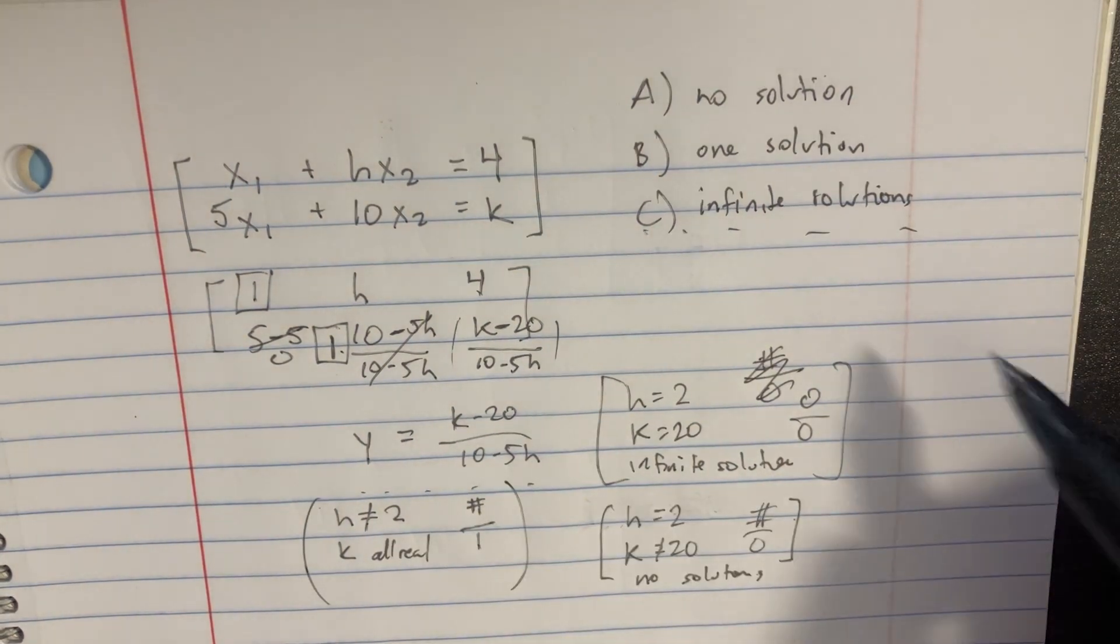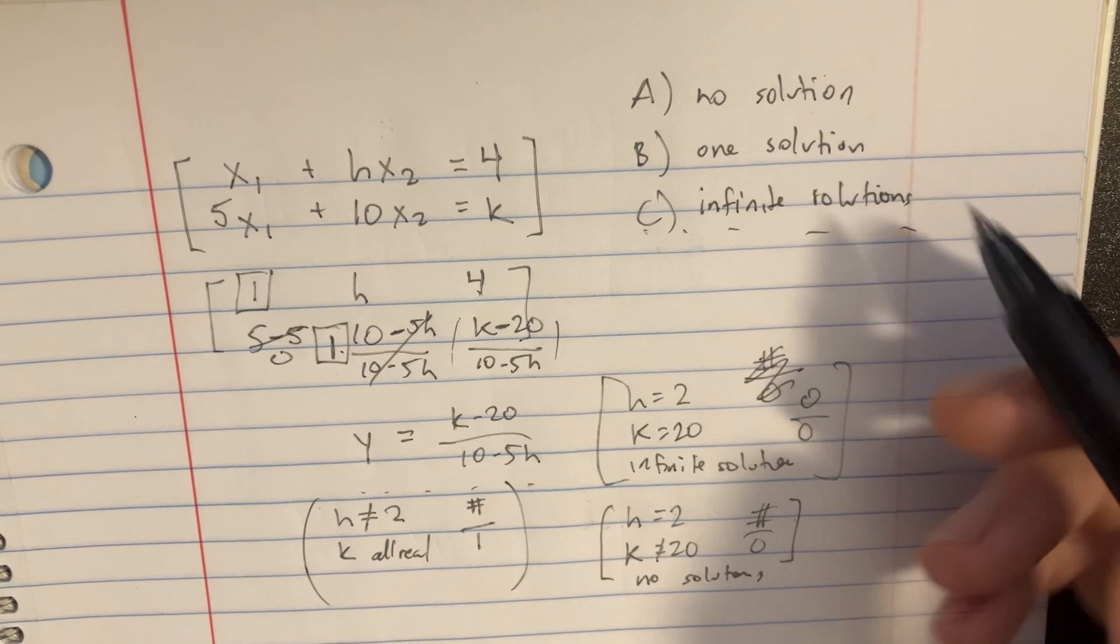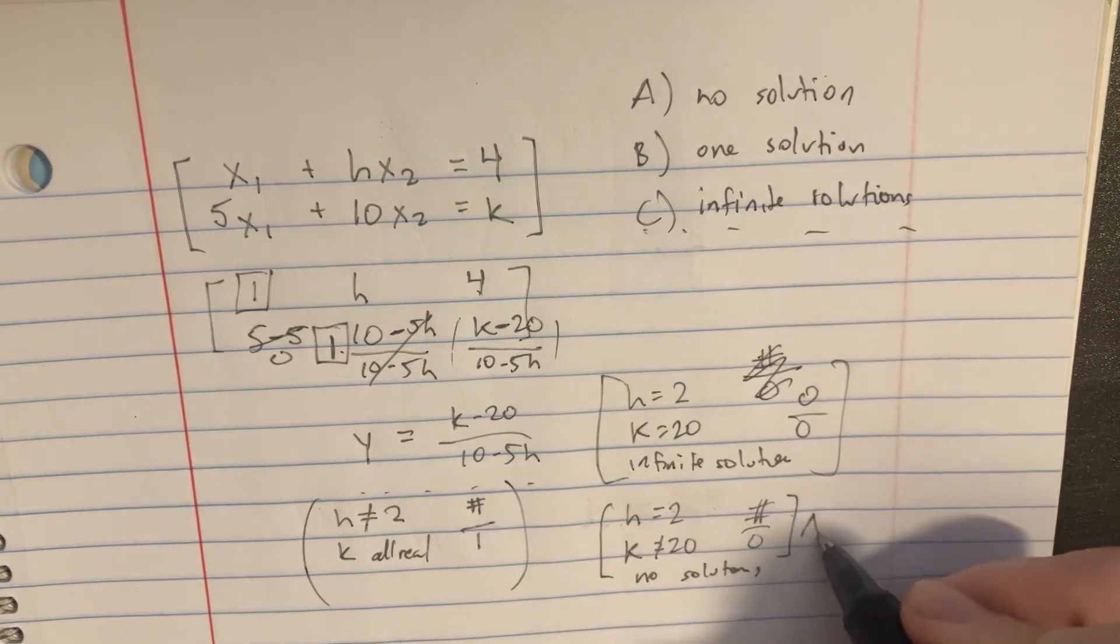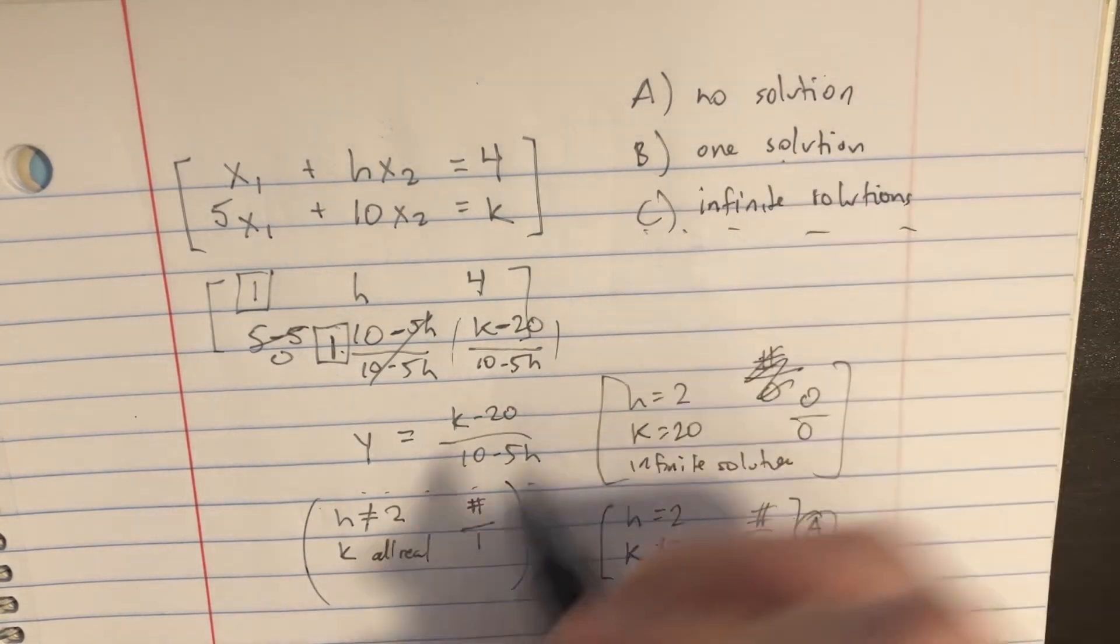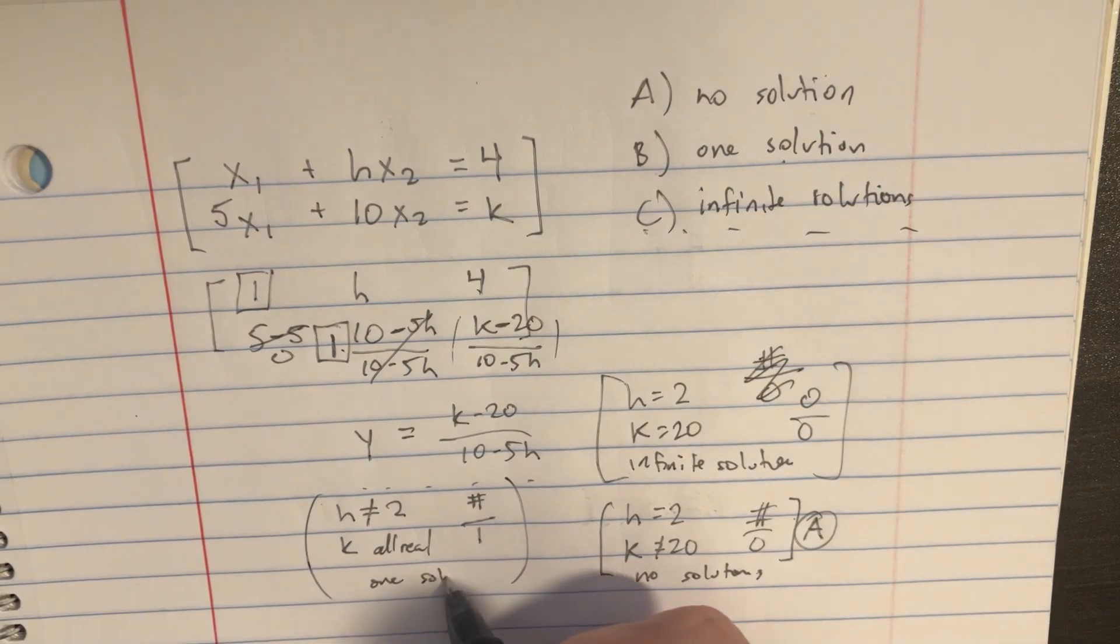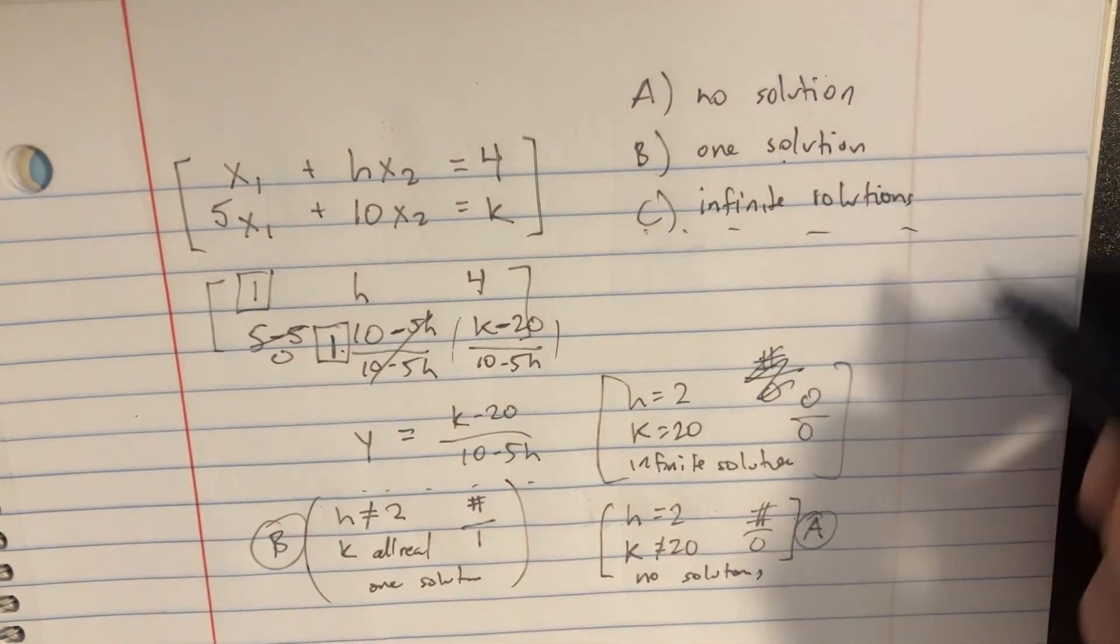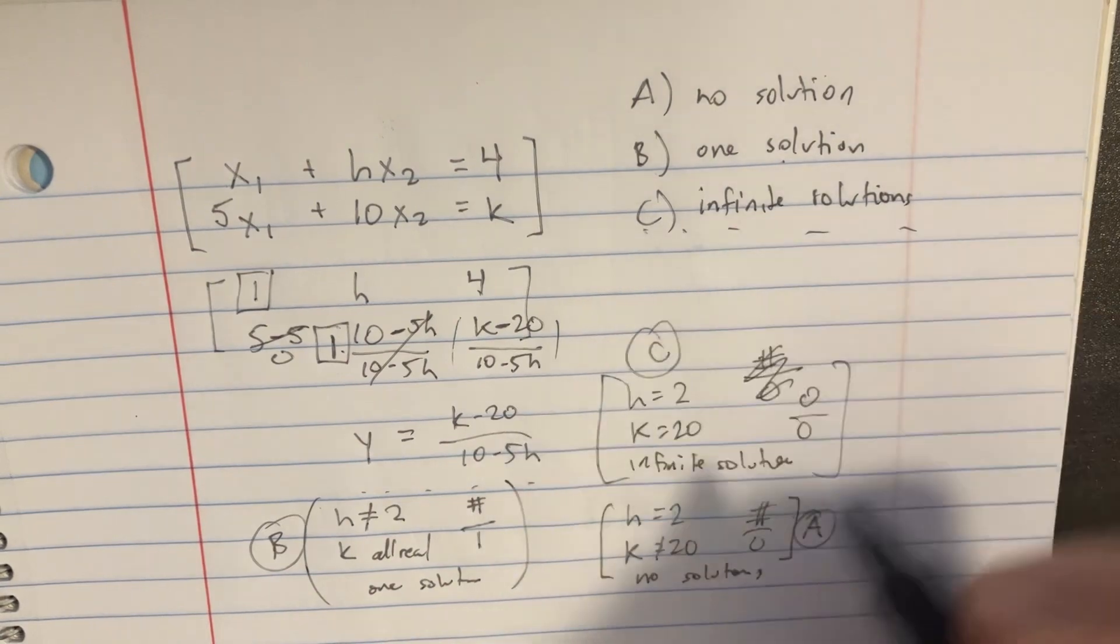And so now you have your situations here. So for no solutions, it would be this one, a. For one solution, it would be this one right here, b. And for the infinite solutions, it would be this one, c.